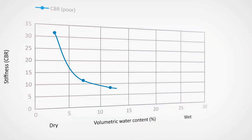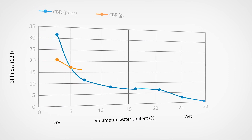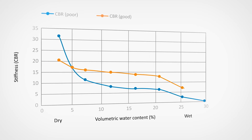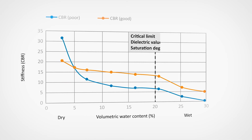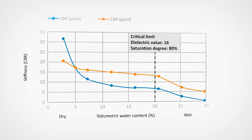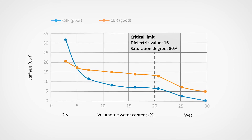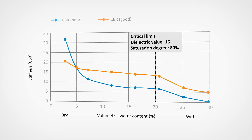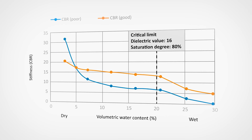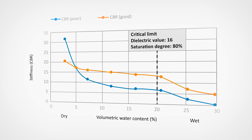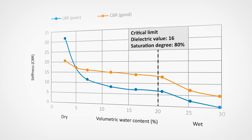Water content is the most important parameter in the lifetime of a pavement structure. Dry road materials are stiff and their bearing capacity is good. However, permanent deformation will be accelerated if and when the saturation level of a material approaches the critical level of 80%. After that, air bubbles in the materials become occluded and pore water pressure increases under heavy traffic loads.